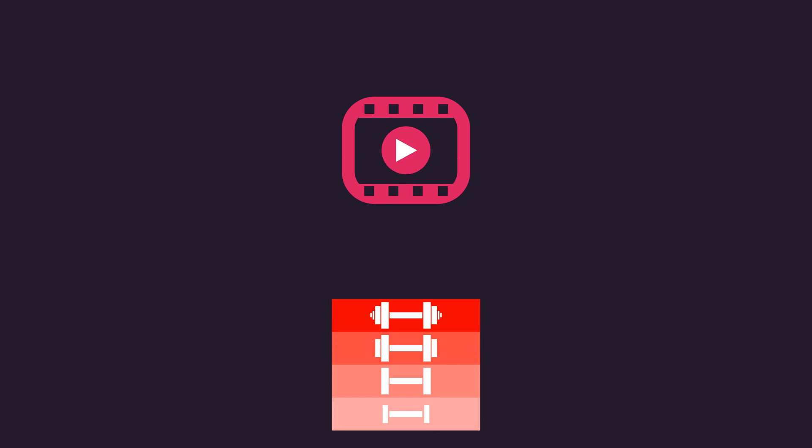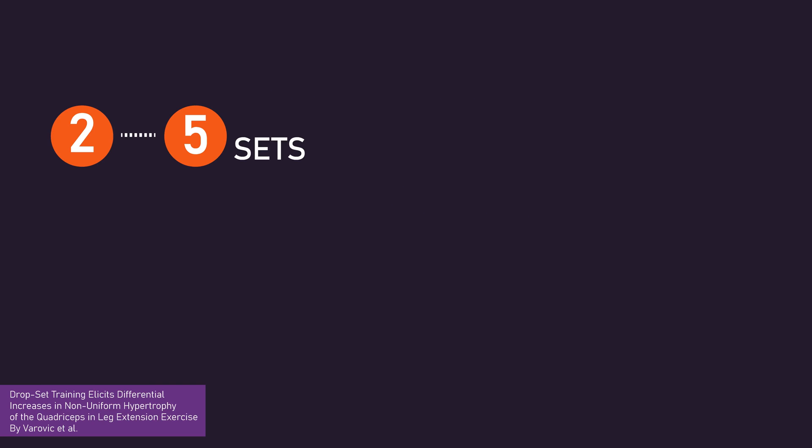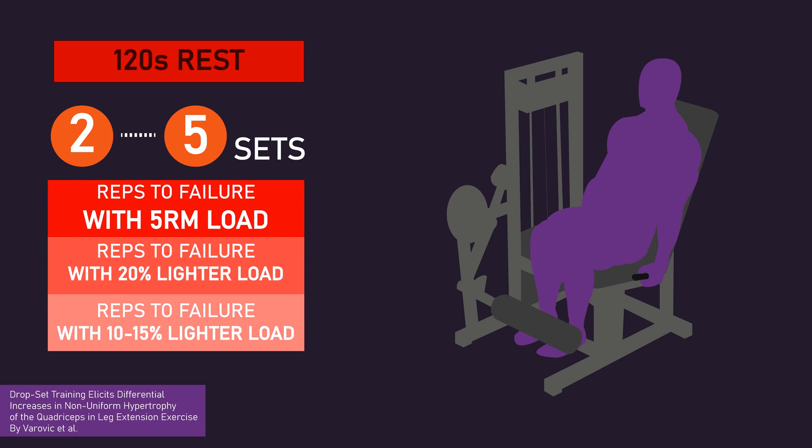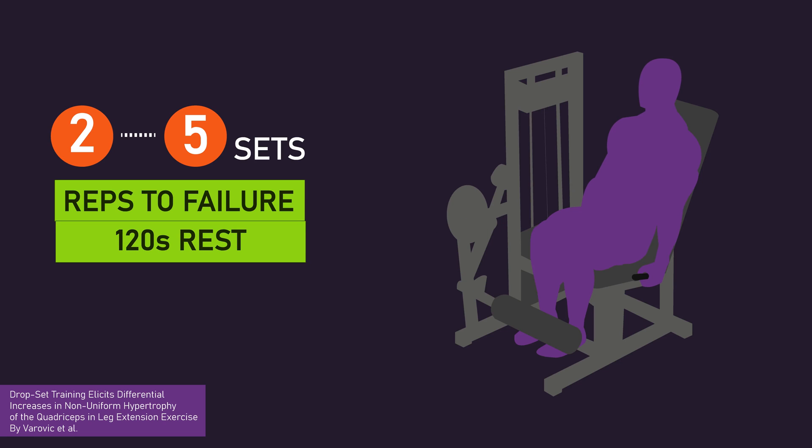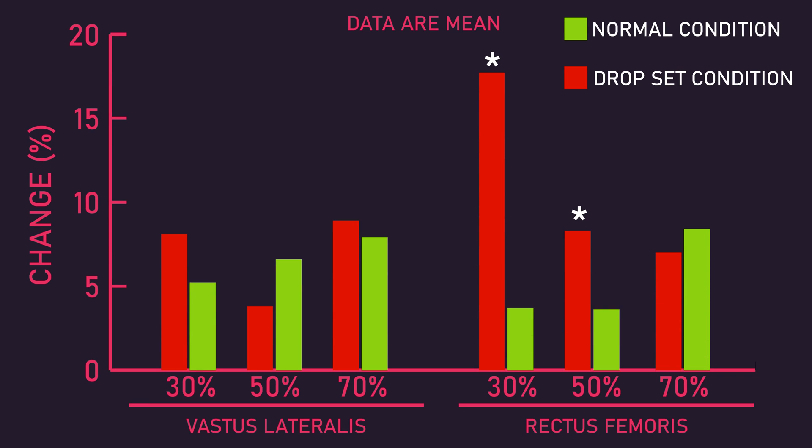As detailed in our drop set video, with isolation exercises at least, some evidence suggests drop sets might confer greater hypertrophy. More precisely, Verovich and colleagues compared how performing 2-5 drop sets per session on the leg extension, interspersed with 120 seconds of rest, with each drop set consisting of repetitions to failure with 2 load reductions, compared to performing 2-5 sets of repetitions to failure on the leg extension, with 120 seconds of rest between sets. It was found quadriceps growth was overall greater with the drop set training.